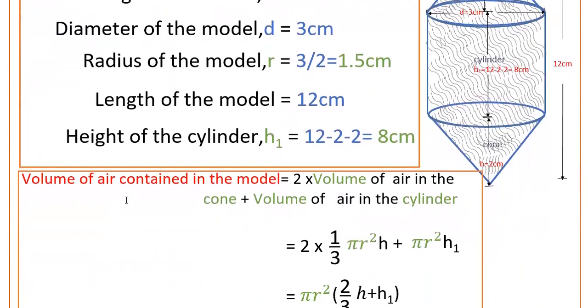So 2 into volume of air in the cone plus volume of air in the cylinder, that is equal to 2 into volume of cone is one third pi r square h plus volume of cylinder is pi r square h1. h1 is height of the cylinder here and h is height of the cone.